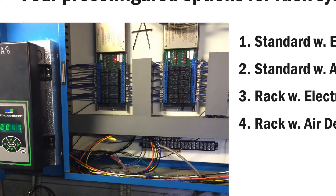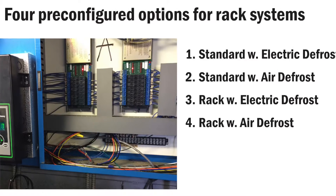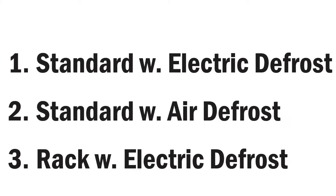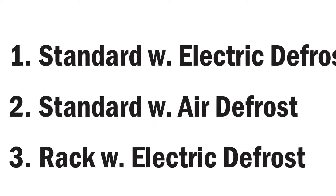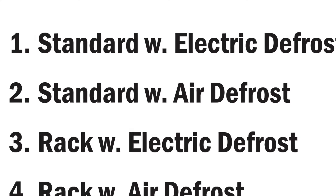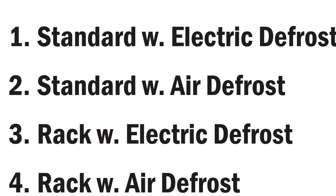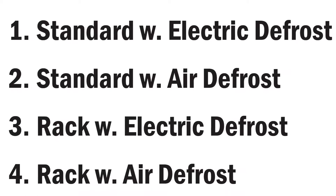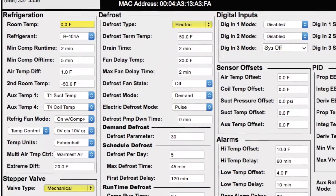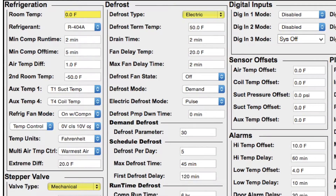Then we developed features for the Keti Evap RE that were specifically tailored for managing the unique challenges associated with rack systems. The Keti Evap RE has four pre-programmed options. It still offers standard control with electric defrost and standard control with air defrost, but now it adds the ability to configure rack control with electric defrost and rack control with air defrost.